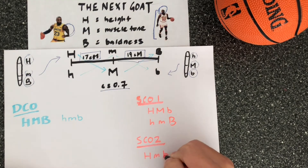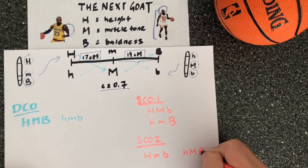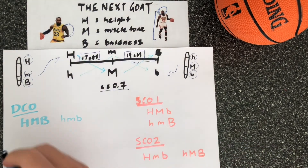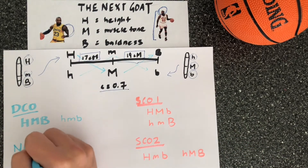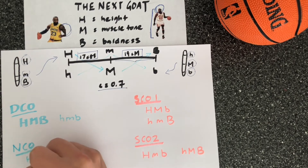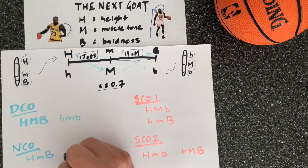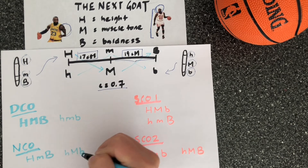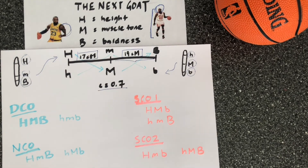A single crossover two is the same idea, except you're crossing over between the second and third loci, giving you those genotypes. The fourth type is a no crossover event, where you stay with capital H, lowercase m, capital B, or lowercase h, capital M, lowercase b.